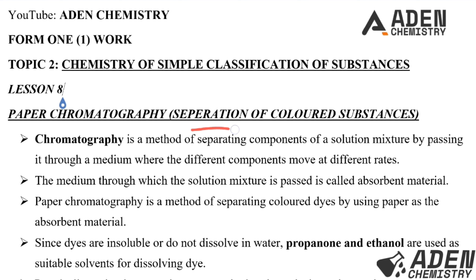So today, lesson 8, we want to go to paper chromatography — that's the separation of colored substances. Chromatography is a method of separating components of a solution mixture by passing it through a medium where the different components move at different rates. The medium through which the solution mixture is passed is called absorbent material.